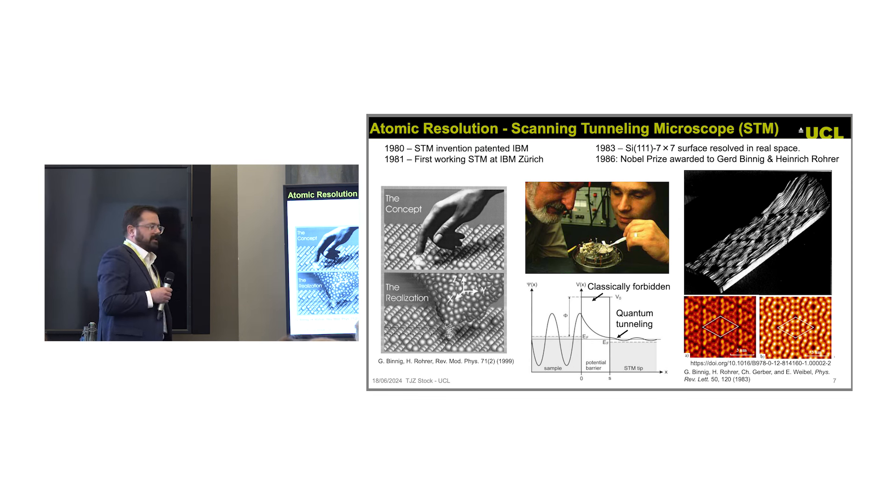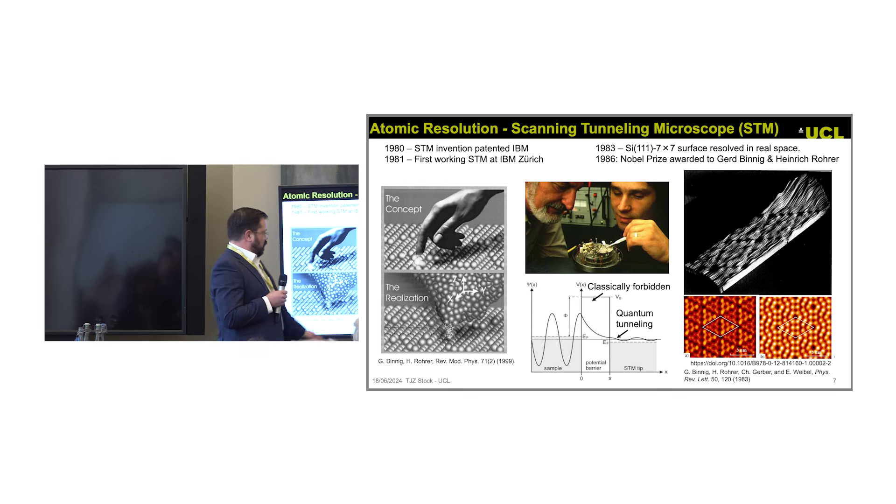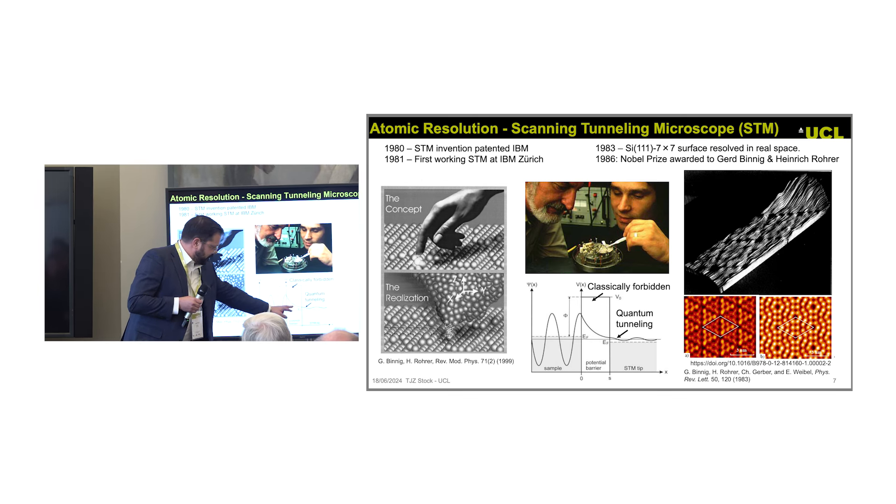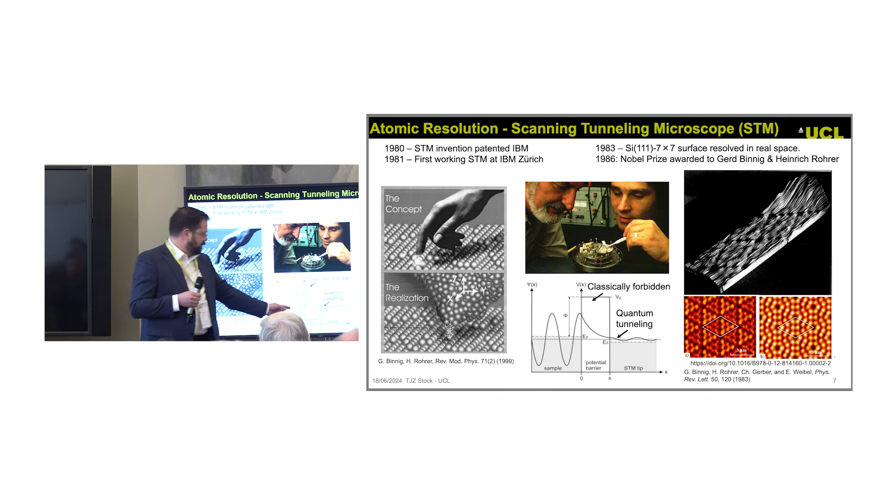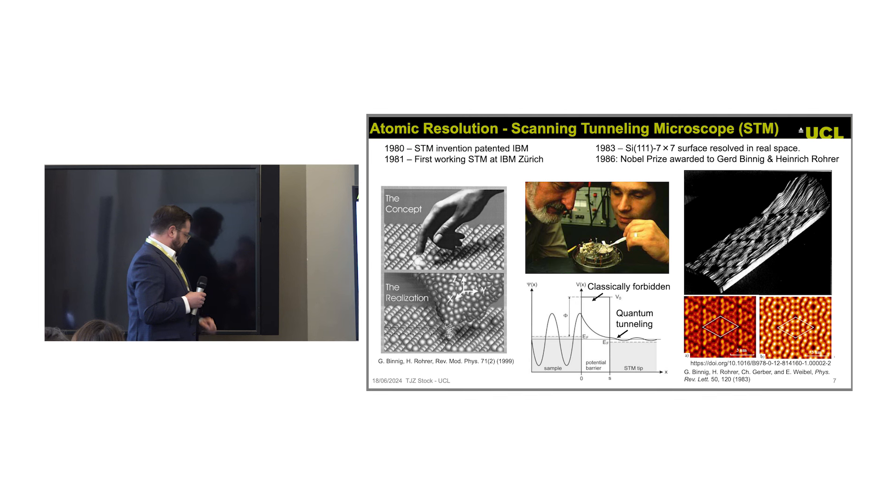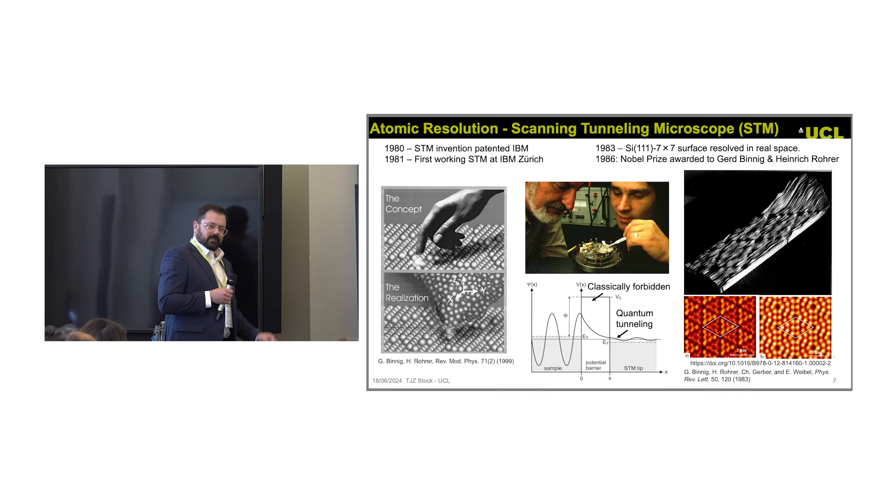How are we going to do this? We use the scanning tunneling microscope. We reach out and touch the atoms with our finger. Our finger's a metal probe. This was developed in 1980 at IBM Zurich and exploits quantum tunneling. Basically, the electron, quantum mechanically, can be on the other side of a potential barrier, go from the sample into the tip, and it decays exponentially.